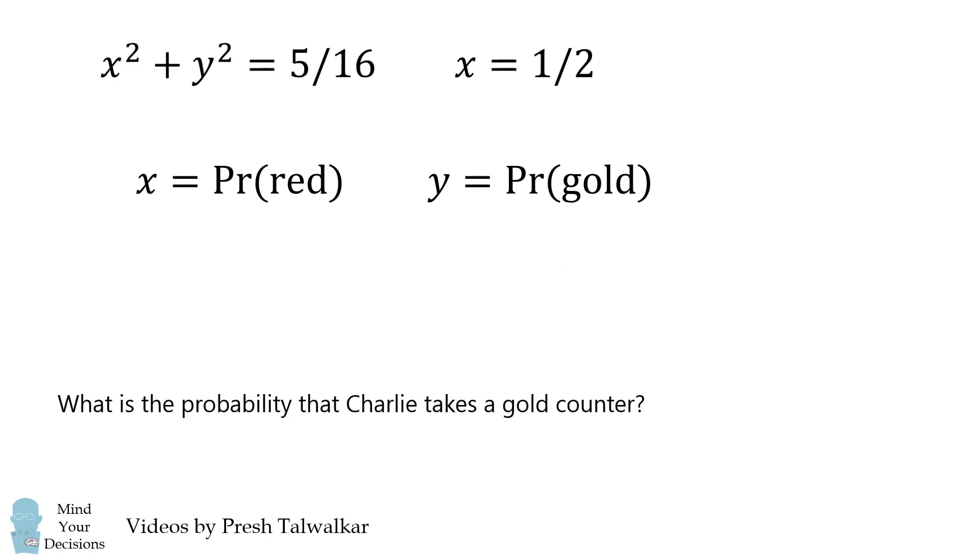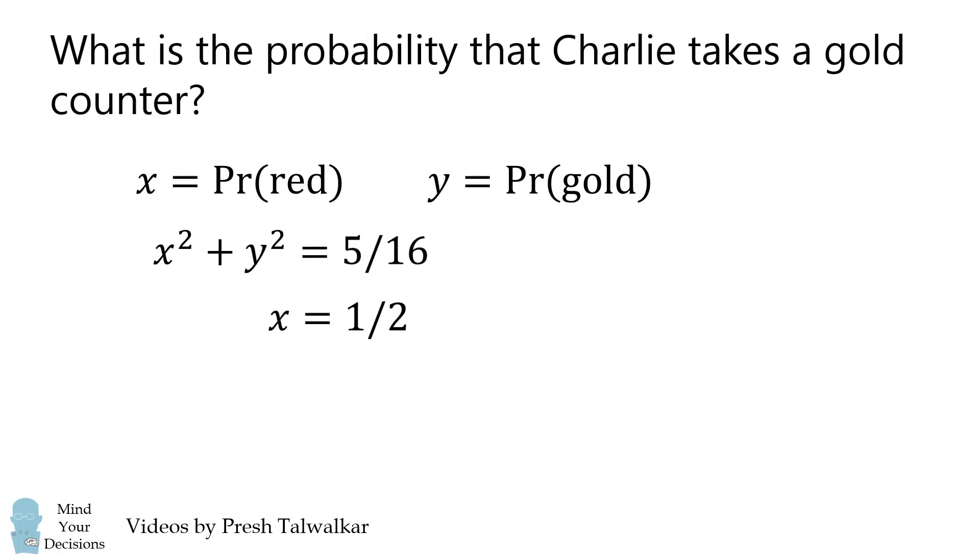We can then take this solution and then go back to our other equation, that x squared plus y squared is equal to 5 over 16, and we can solve for y, which is the probability that Charlie takes a gold counter.